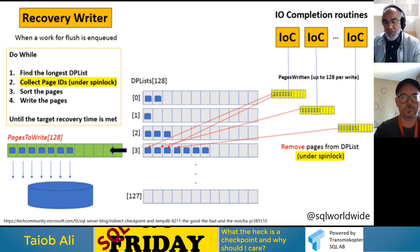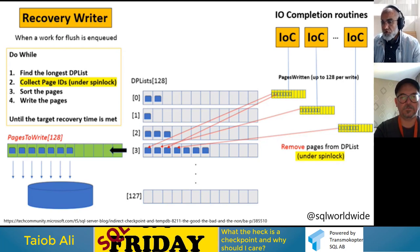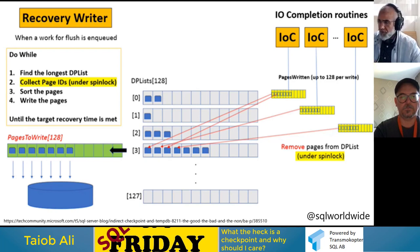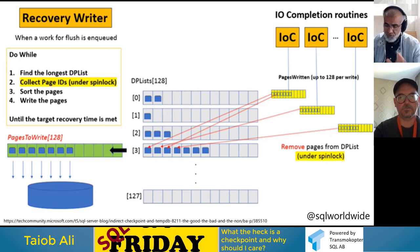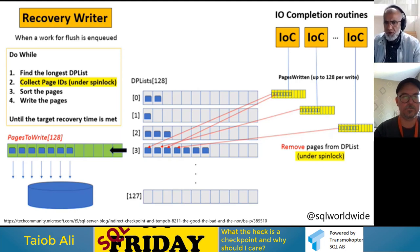There's a detailed article on how indirect checkpoints were implemented and how they smooth out IO spikes. It also discusses the spinlock contention issue that was fixed in SQL Server 2019 CU5. There is a trace flag 3468 to disable indirect checkpoints in tempdb if needed. Some blog posts suggest testing before enabling on older upgraded databases, particularly around non-yielding scheduler errors that appeared prior to the 2019 CU5 fix.